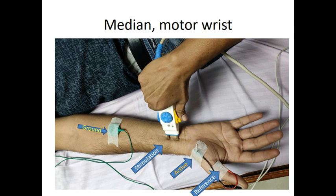Good morning. Today we will discuss the electrode placement of median motor nerve. The recording electrode is placed close to the motor point of APB, and the reference electrode is 3 centimeters distal at the first metacarpophalangeal joint. A supramaximal stimulation is given at the wrist and at the elbow for evaluation of the proximal segment of the median nerve.